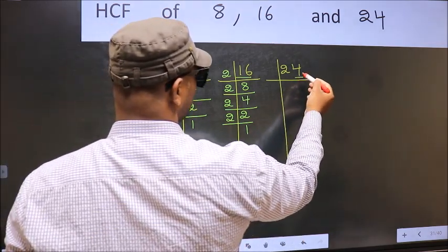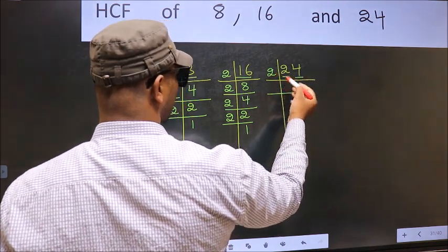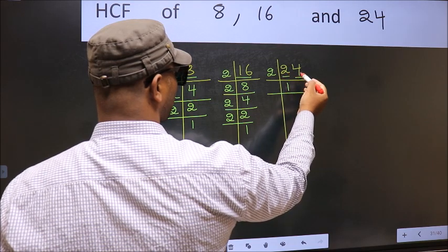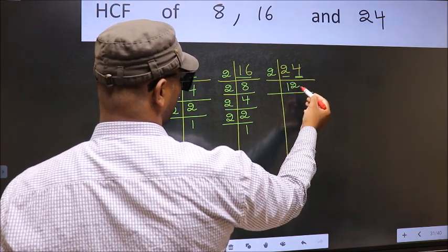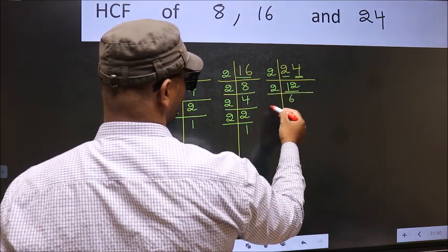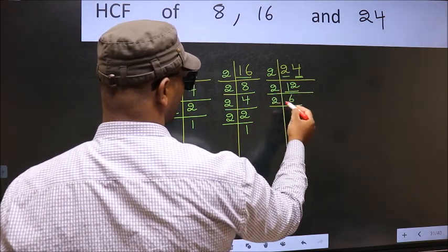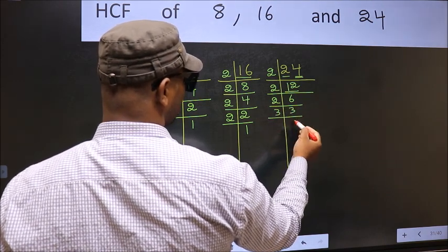Now the other number. Last digit 4 even so take 2. First number 2. When do we get 2 in 2 table? 2 times 1 is 2. The other number 4. When do we get 4 in 2 table? 2 times 2 is 4. Now 12, 12 is 2 times 6 is 12. Now 6 is 2 times 3 is 6. Now 3 is a prime number so 3 times 1 is 3.